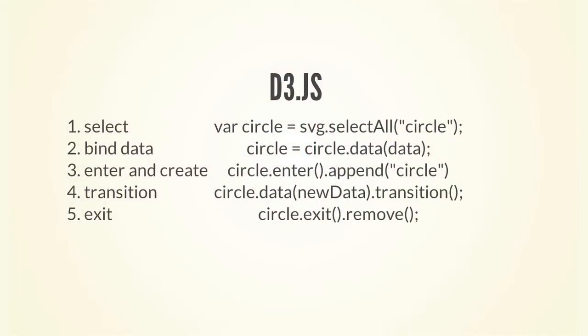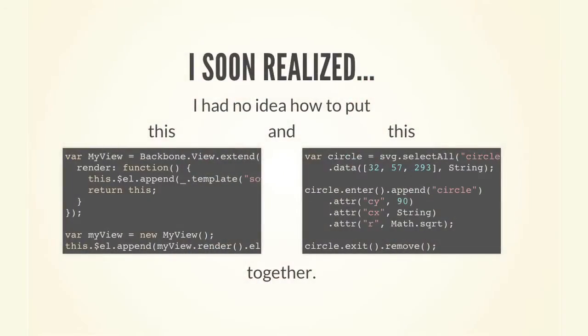D3, on the other hand, is a library that helps visualize complex data with SVG. One of the most common patterns is to select the elements, find the data, enter it, update it, and exit it. As I started working on this project, I started to realize that while these were two really great, really powerful libraries, I had no idea how to put them together well and effectively.